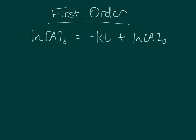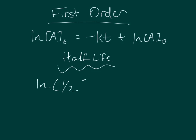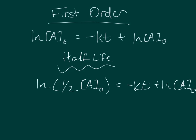For first-order reactions, the natural log of the concentration of A at time t equals the negative rate constant times time t plus the natural log of the initial concentration of A. First-order reactions also have a half-life formula derived by substituting half the initial concentration of A. The result is that half-life equals 0.693 divided by the rate constant. This means that each half-life of first-order reactions takes the same amount of time.